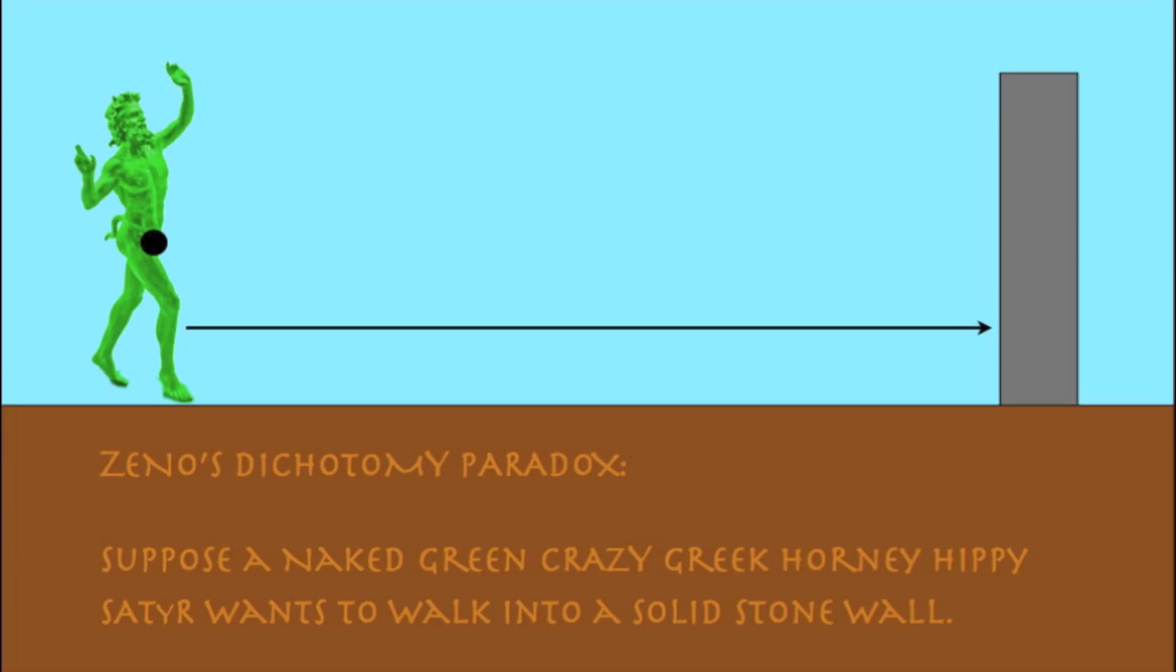Zeno's dichotomy paradox goes like this. Suppose a naked, green, crazy Greek, horny hippie satyr wants to walk into a solid stone wall.